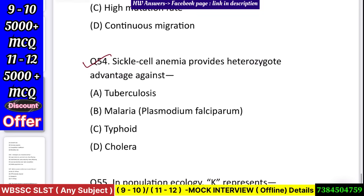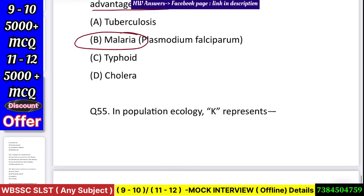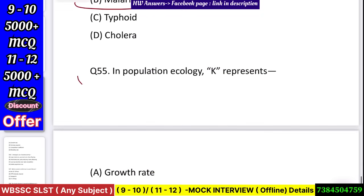Question number 55: Sickle cell anemia provides heterozygote advantage against — tuberculosis, malaria, typhoid, or cholera? Answer: malaria.